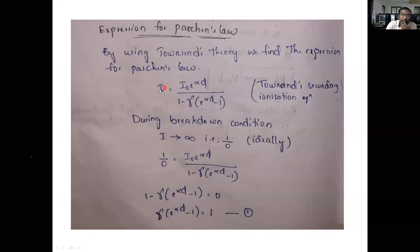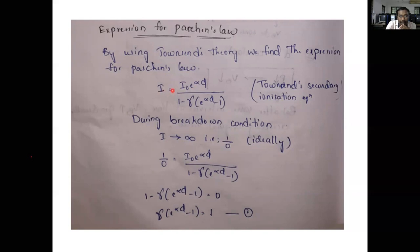During the breakdown condition, the current is infinity — ideally infinity, practically the maximum current applied by the source equals the current flowing into the dielectric. Actually, the insulator is not allowing current, but when we apply high voltage, the dielectric insulator acts as a conductor instead of an insulator. That's why we take the current as infinity. The current is limited by using an external limiting resistance. Ideally, we substitute one by zero, so the denominator becomes zero.